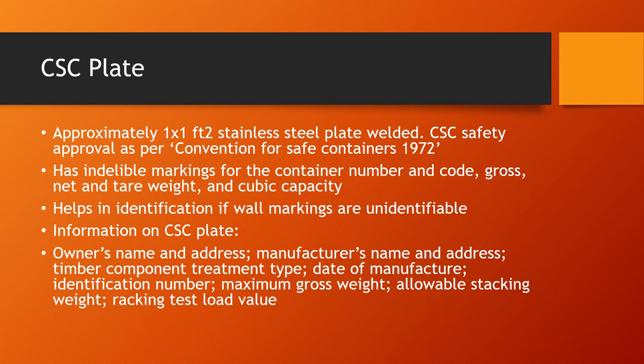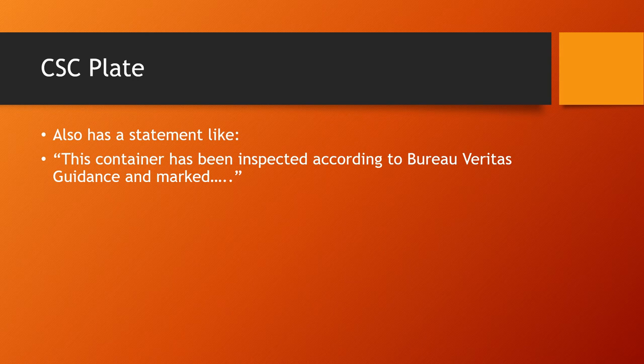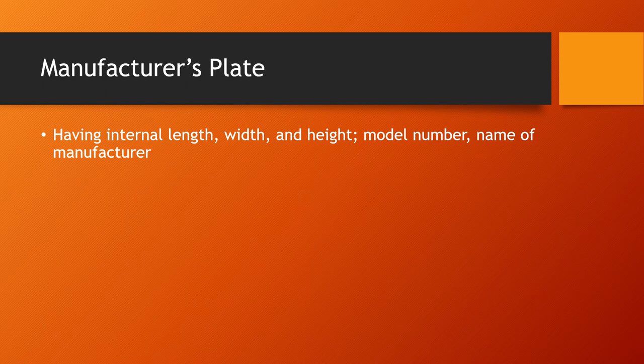The CSC plate helps with identification if the wall markings become unidentifiable due to rubbing or erasure. The information on the CSC plate also includes the owner's name and address, the manufacturer's name and address, the timber component treatment type, the date of manufacture, identification number, maximum gross weight, allowable stacking weight, racking test load value, and a statement such as: 'This container has been inspected according to Bureau Veritas guidance and marked accordingly.'